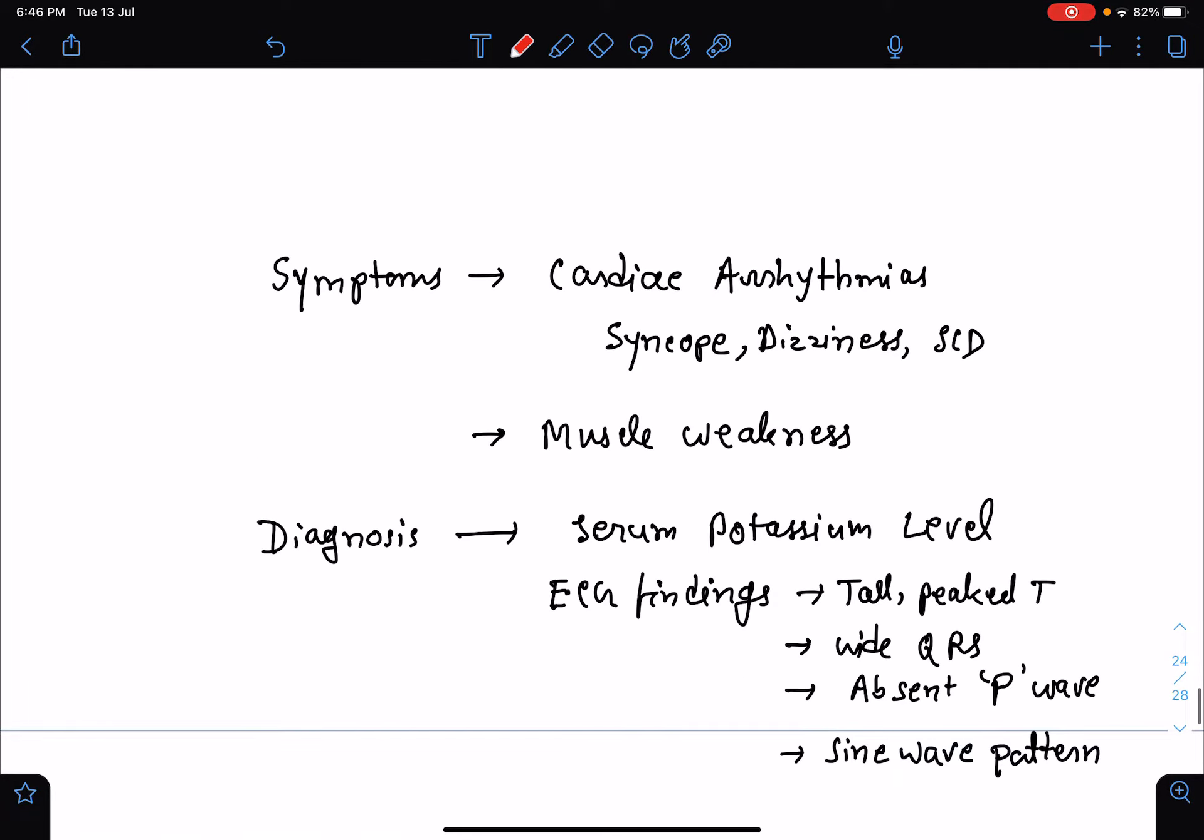If we talk about the symptoms of hyperkalemia, most important symptoms are cardiac symptoms. The patient may present with cardiac arrhythmias, may be ventricular or atrial arrhythmias. The patient may have syncope, dizziness, even sudden cardiac death. Hyperkalemia causes muscle weakness because it causes partial depolarization in the muscle. If it involves respiratory muscle, the patient may present in a severe condition with respiratory failure also.